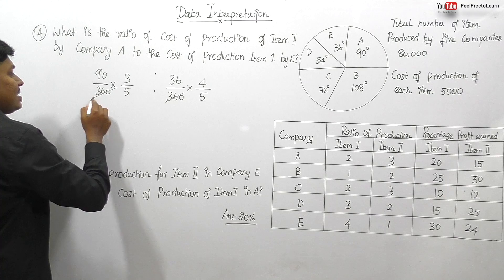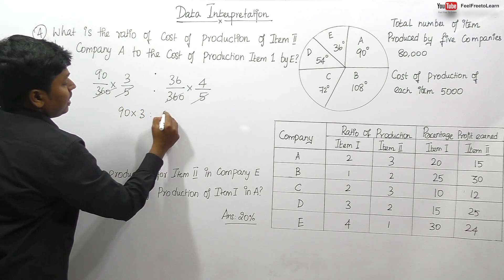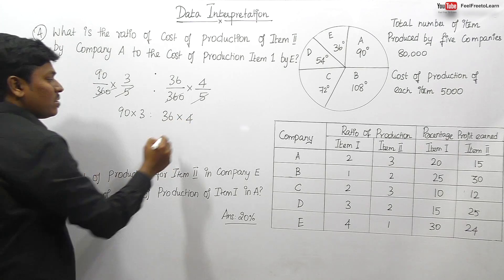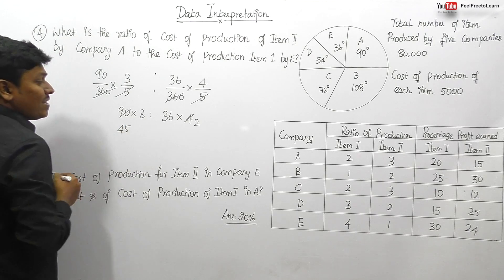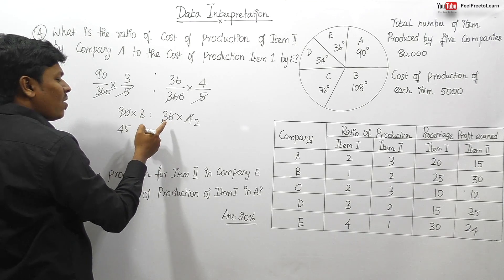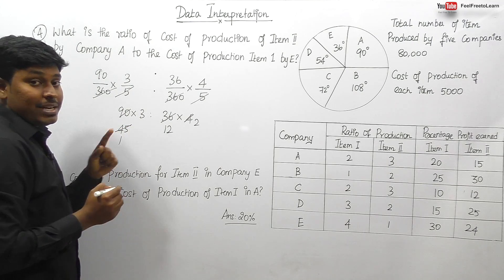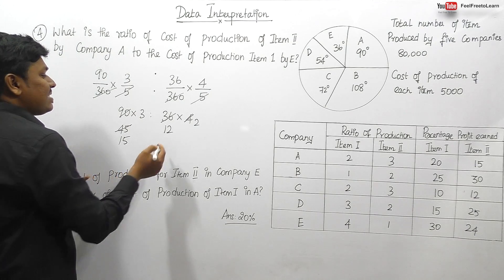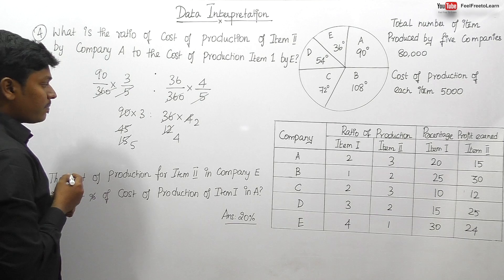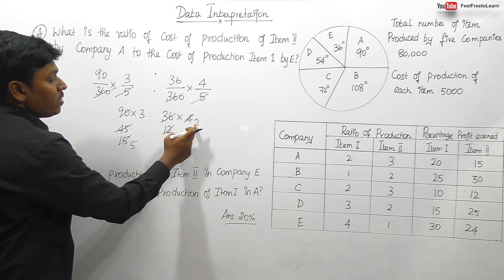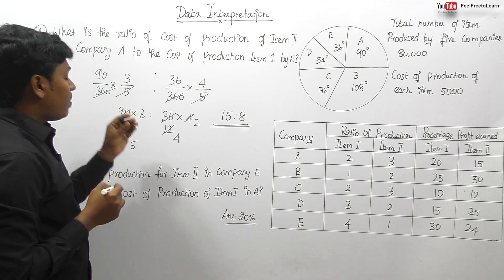The 360s cancel and the 5s cancel, leaving 90 × 3 versus 36 × 4. Canceling by 2: 45 versus 72; dividing by 3: 15 versus 24; simplifying further gives 5 × 3 = 15 and 4 × 2 = 8. So the ratio is 15:8.